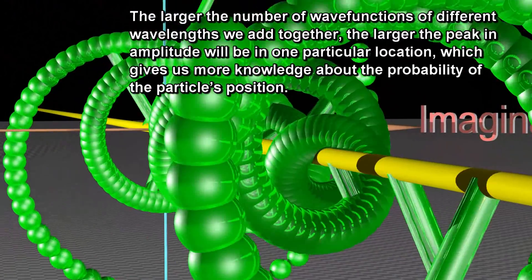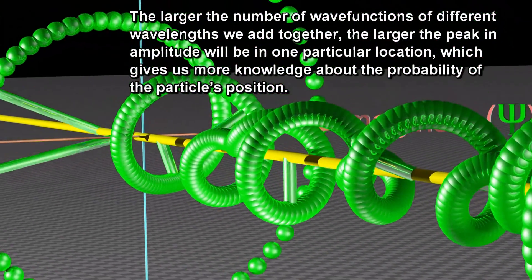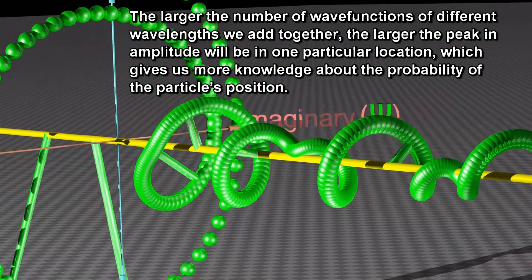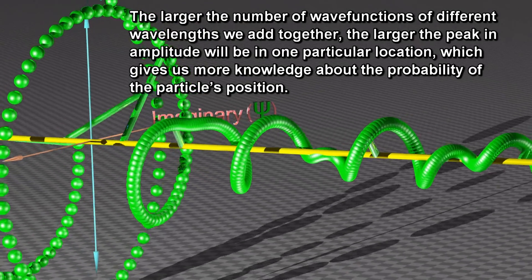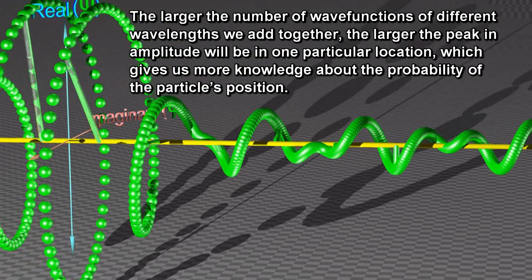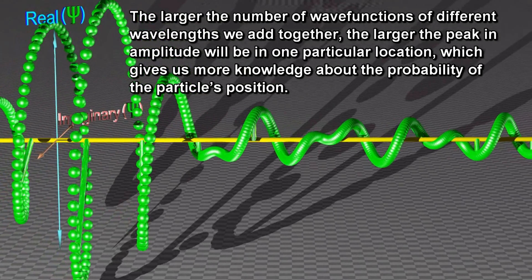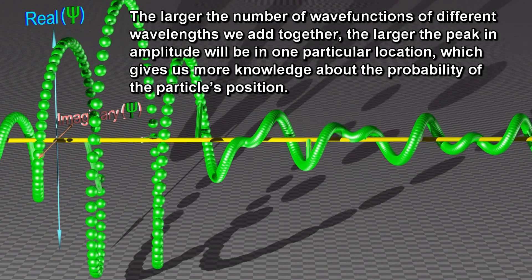The larger the number of wave functions of different wavelengths we add together, the larger the peak in amplitude will be in one particular location, which gives us more knowledge about the probability of the particle's position.